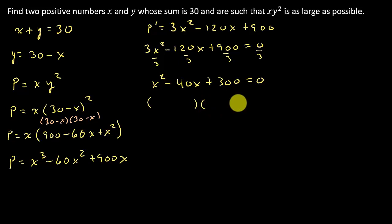And so let's see what we get here. That's x, x, and I believe we can do minus 30 and minus 10. So I get x equal 30 or x equal 10.